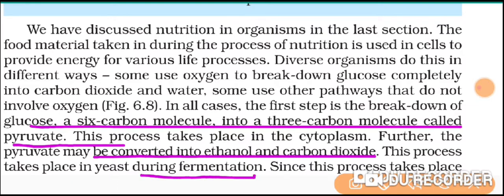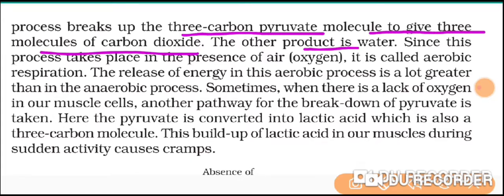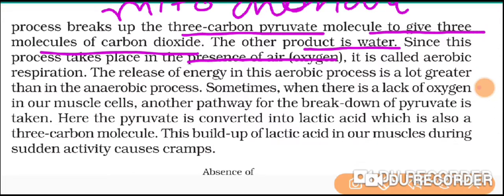Now let us take up the next step of breakdown of glucose. The three-carbon atom compound pyruvate can further break down into three molecules of carbon dioxide and water. This requires oxygen — unlike the previous step. This process of pyruvate converting to carbon dioxide and water requires oxygen, and it takes place in the mitochondria.